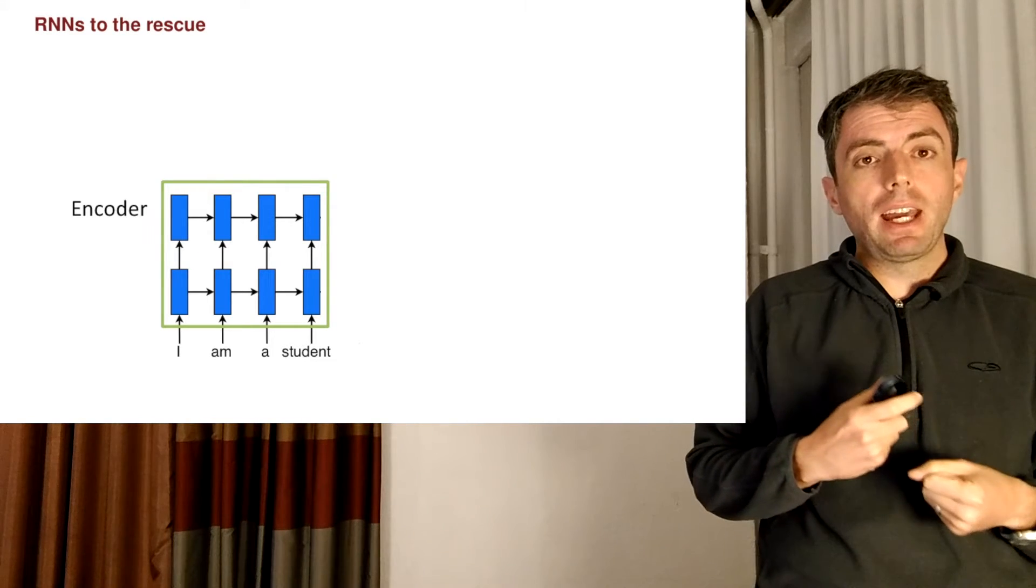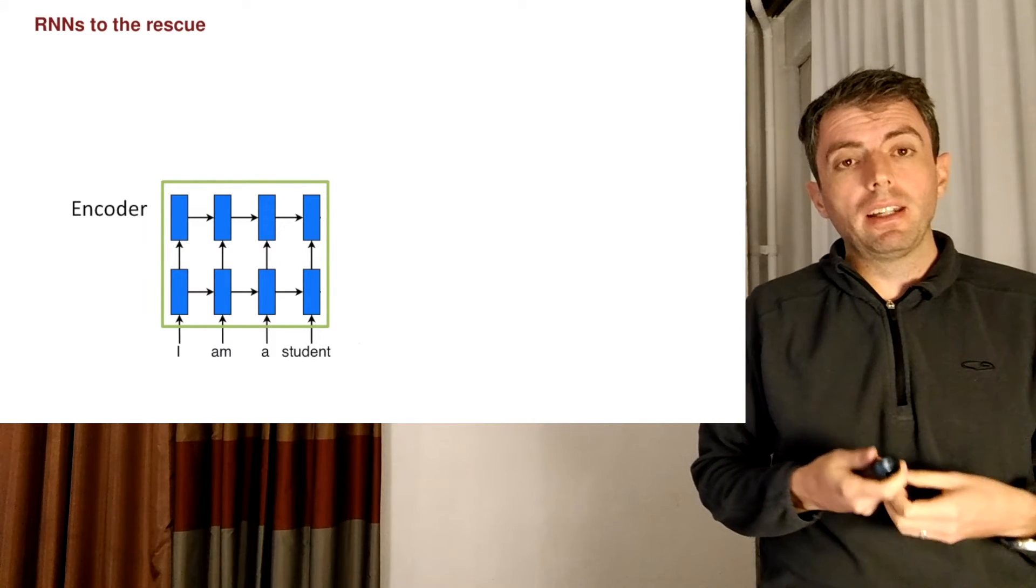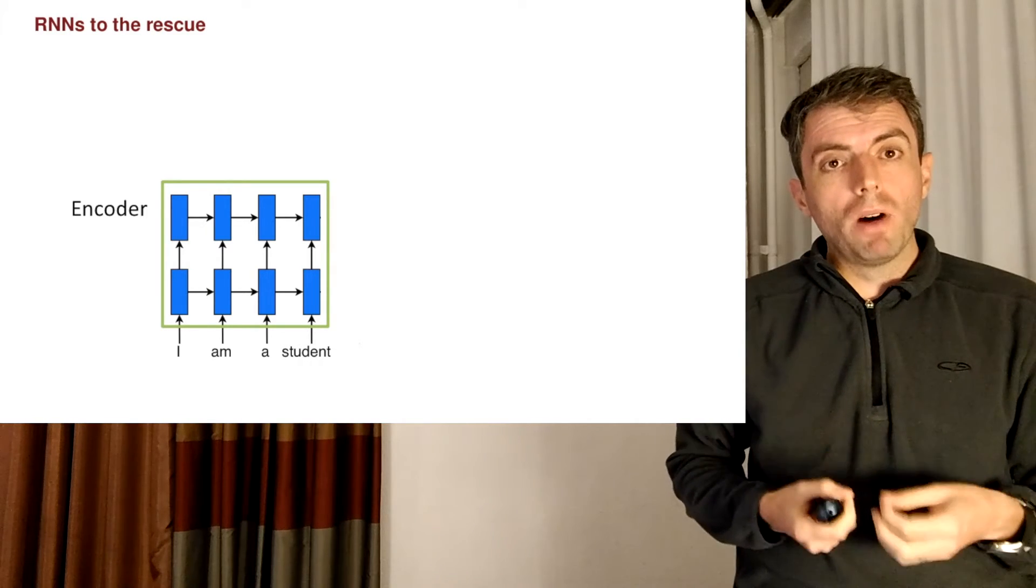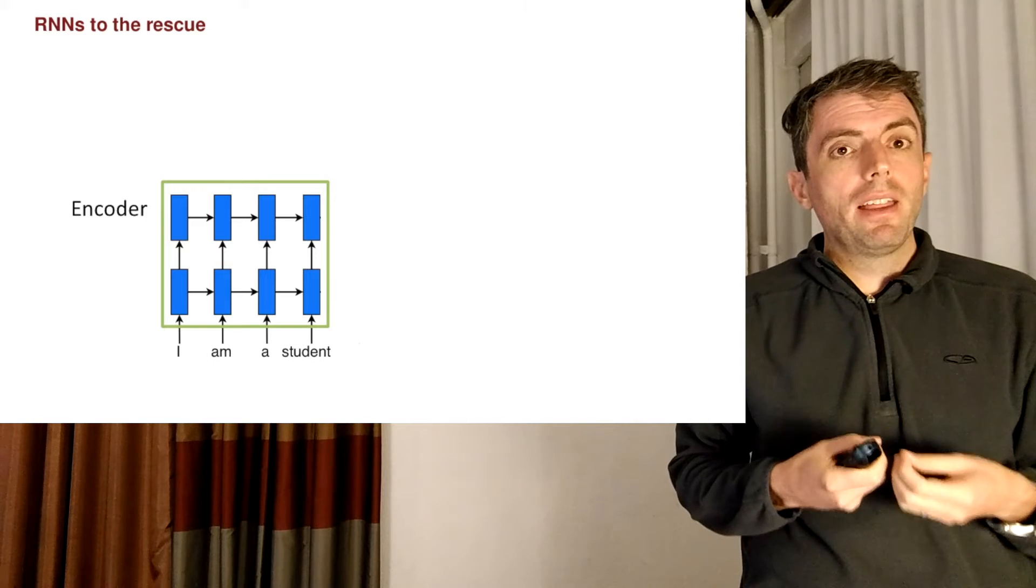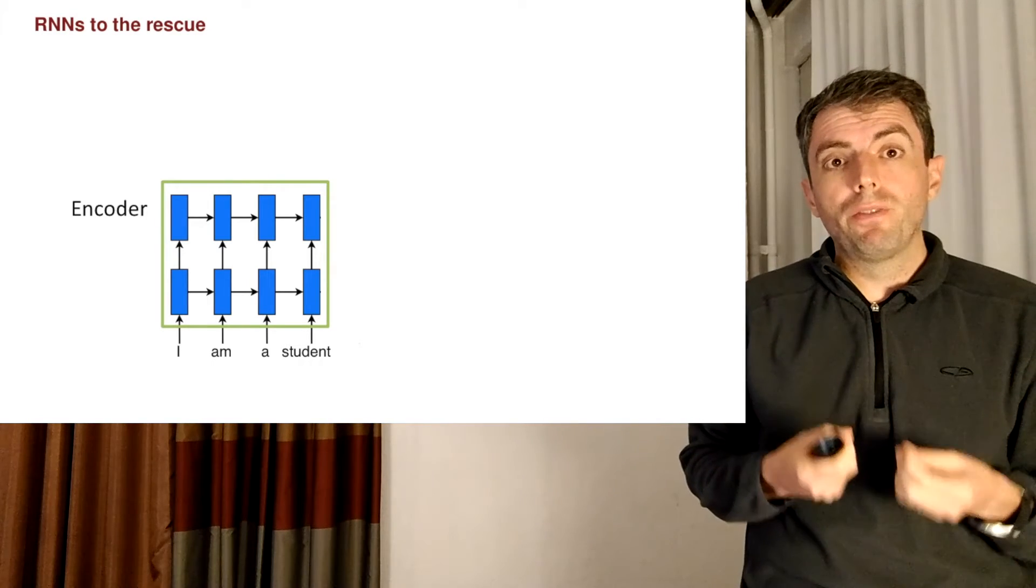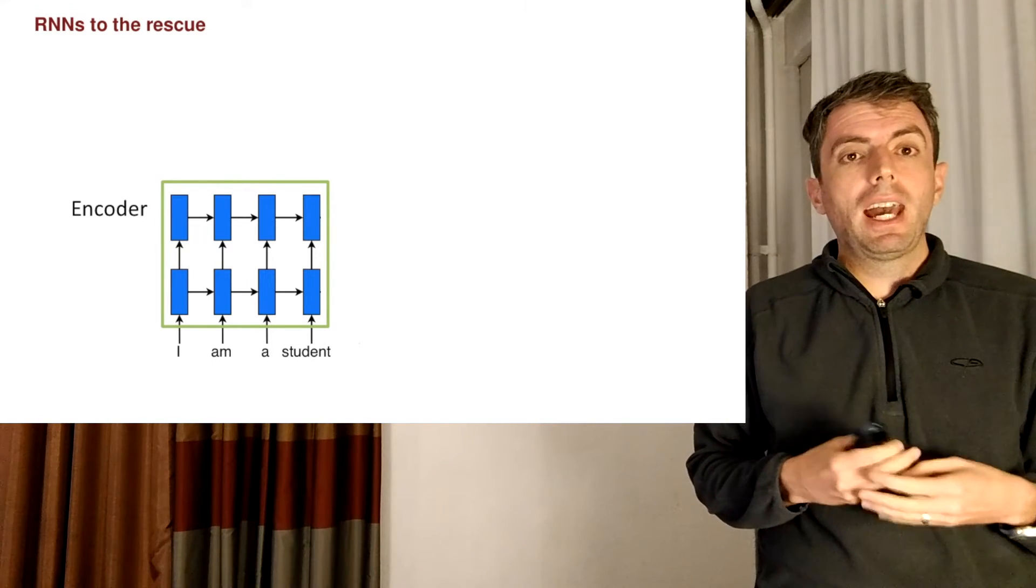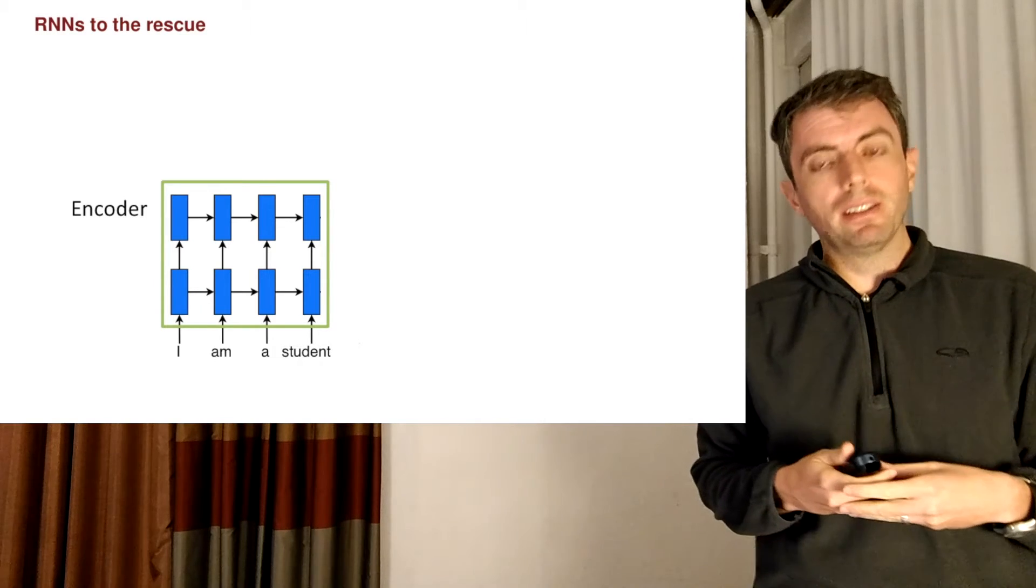And at the end of the RNN, the final state of the RNN encodes what the sentence is about. So we call this part of the RNN the encoder. And the final hidden layer of this RNN has represented the meaning of the sentence.